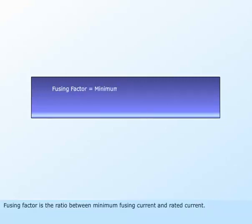HRC has a fusing factor of 1.45. The fusing factor is the ratio between minimum fusing current and rated current.